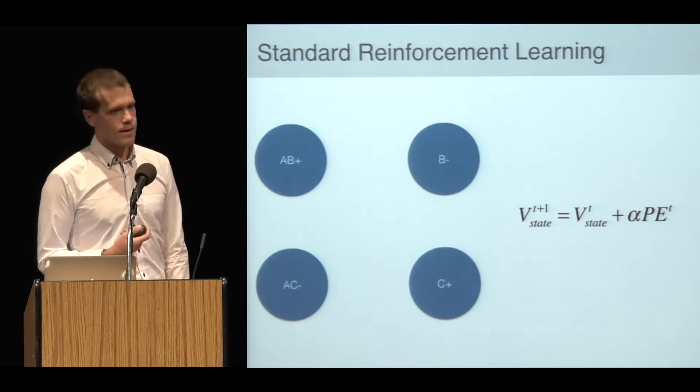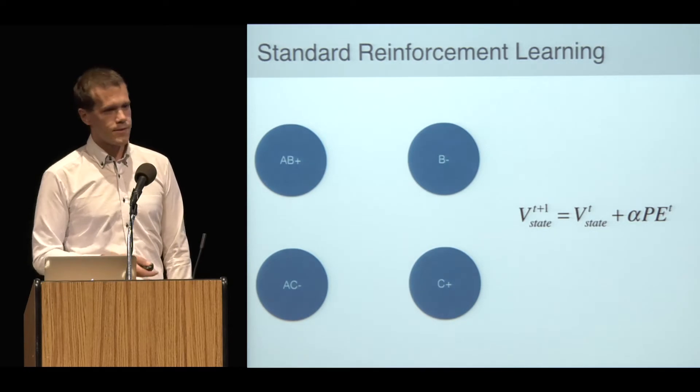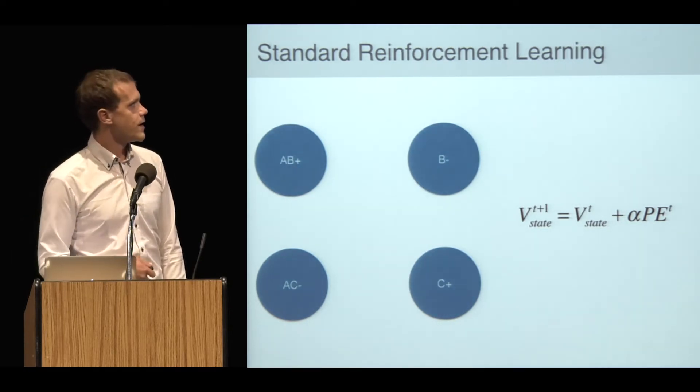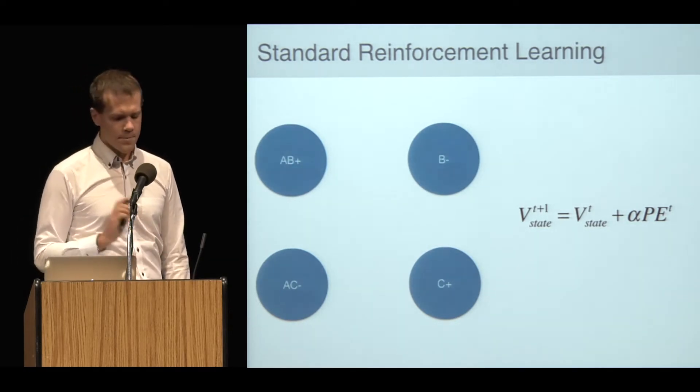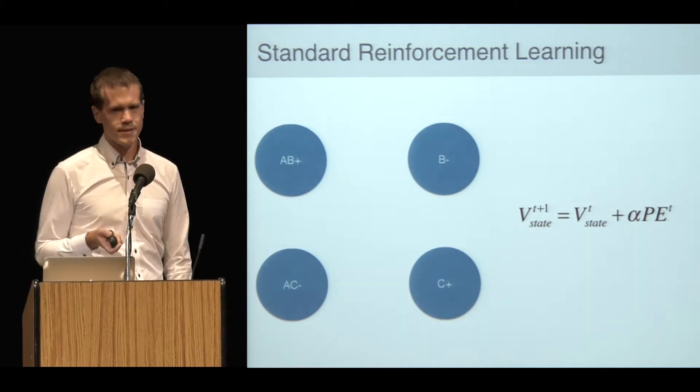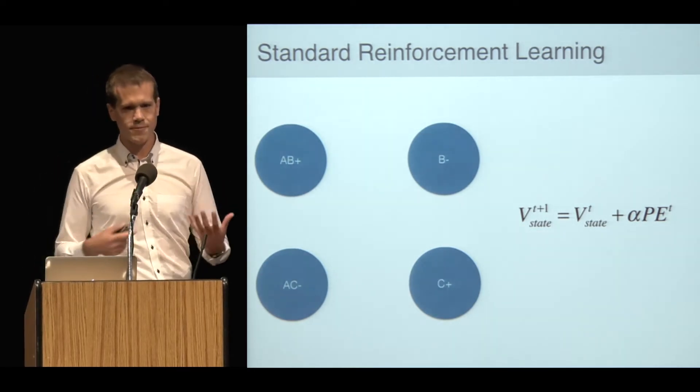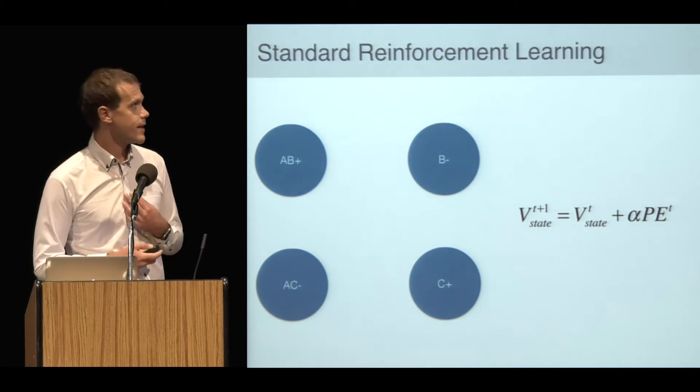To start off, I'm going to do the most straightforward thing, which I'm calling standard RL that learns a separate value for each of the four stimuli. But I also want to allow for the possibility that subjects aren't perfect at this task. I kind of set this up as a hard problem.